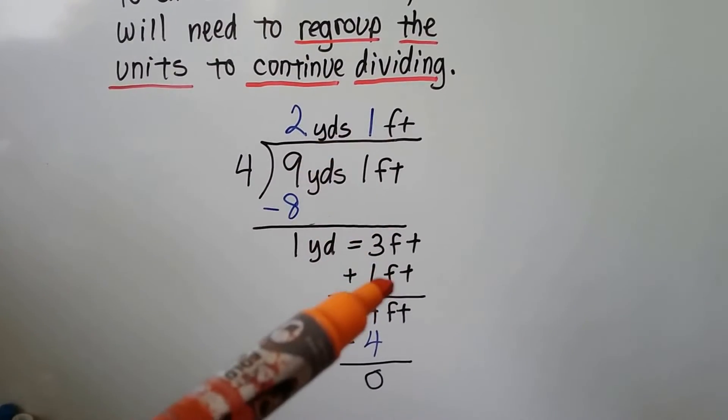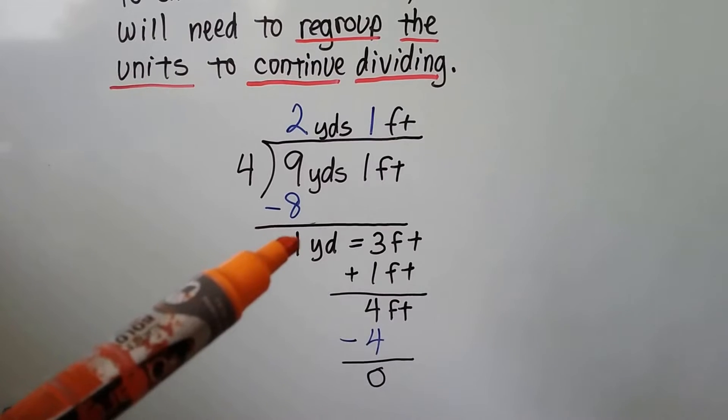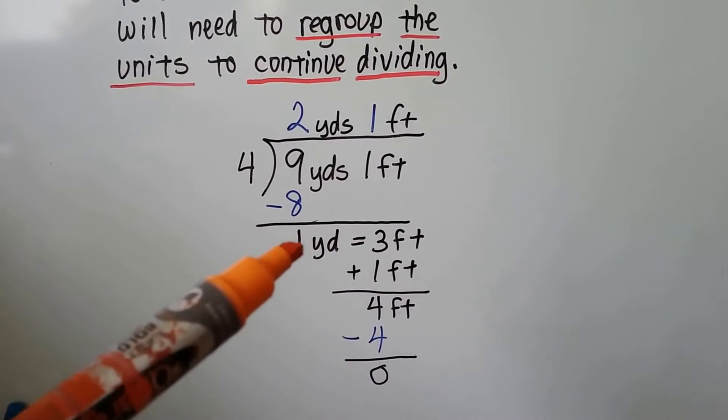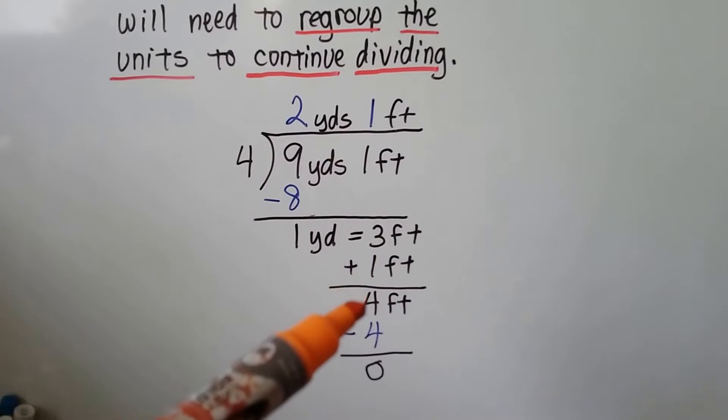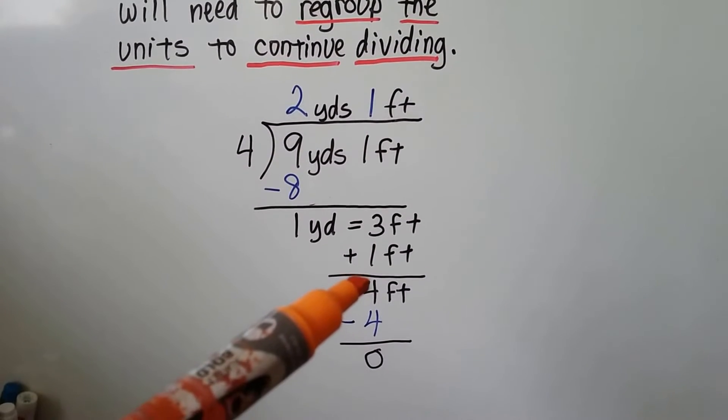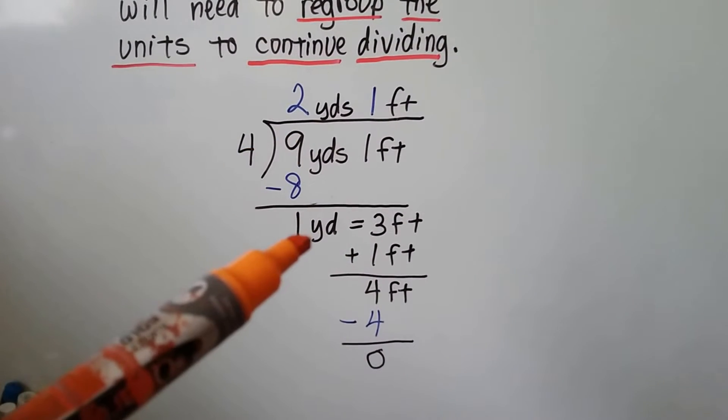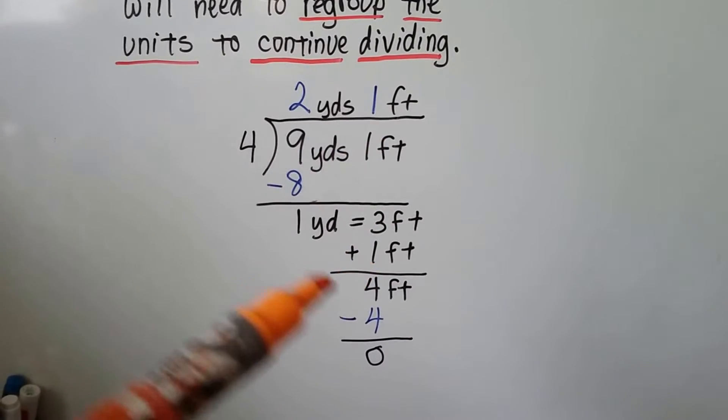If we're going to drop down the feet now, we need to convert that yard into feet. Well, there's 3 feet in 1 yard. Now we can add the 1 foot to it, so we have a total of 4 feet. See how we did that? We converted the yard to feet, then we added that foot to it.